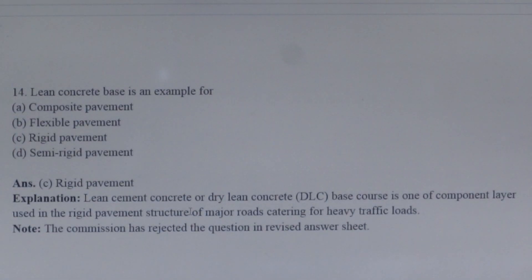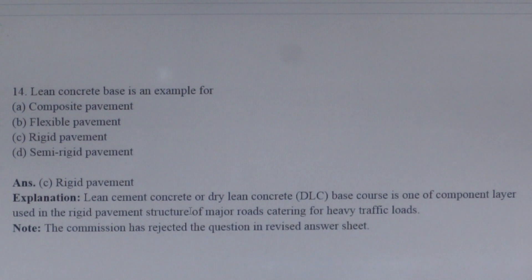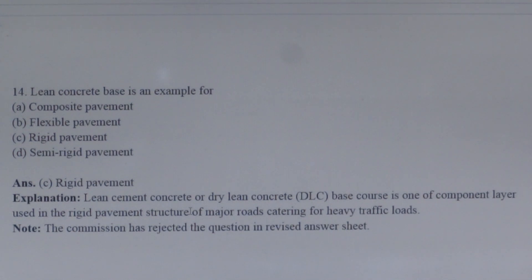Next question: Lean concrete base is an example of what? A lean concrete base or DLC (dry lean concrete) is one of the component layers in a rigid pavement structure. The correct answer is option C. However, the commission has rejected the question because the question has no clear meaning.